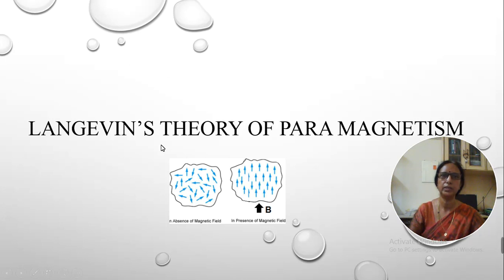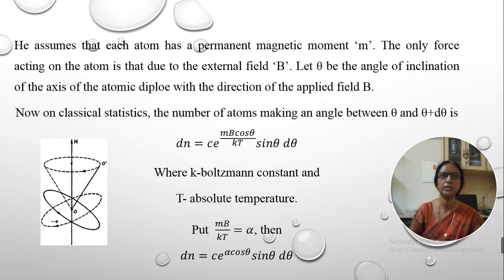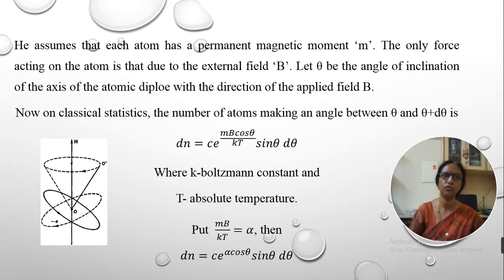In this theory, I am going to arrive at the expression for magnetic susceptibility, and we are going to show in this derivation that magnetic susceptibility is positive and it is depending on temperature. For this, let us consider that Langevin assumed that each atom has a permanent magnetic moment M, and the only force acting on the atom is that due to the external magnetic field.